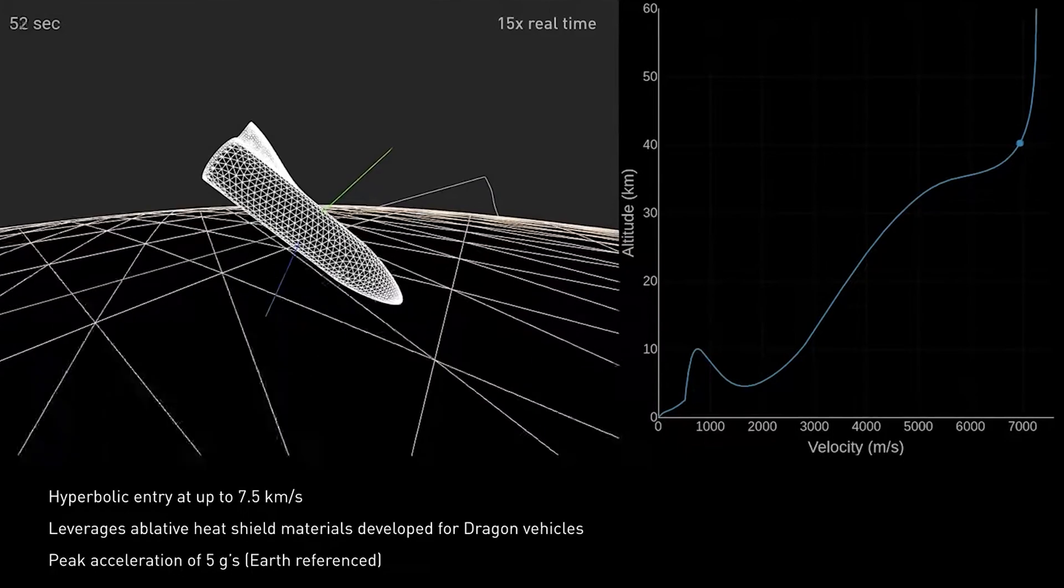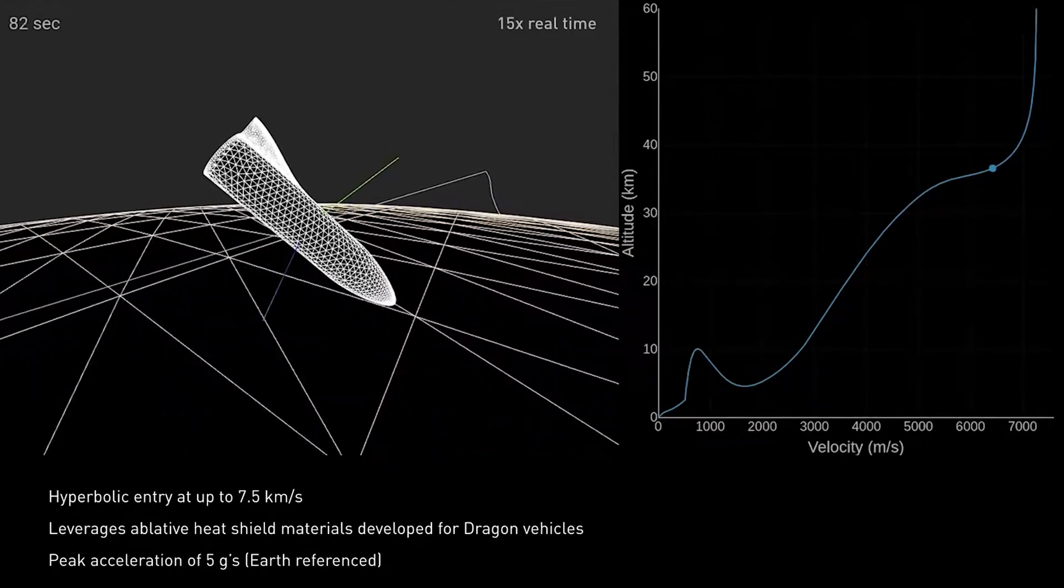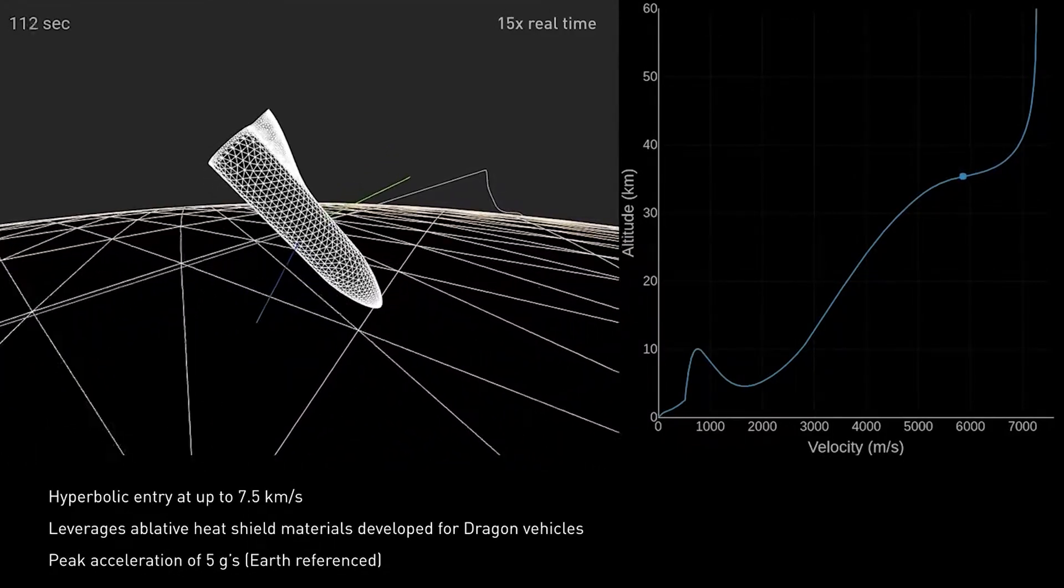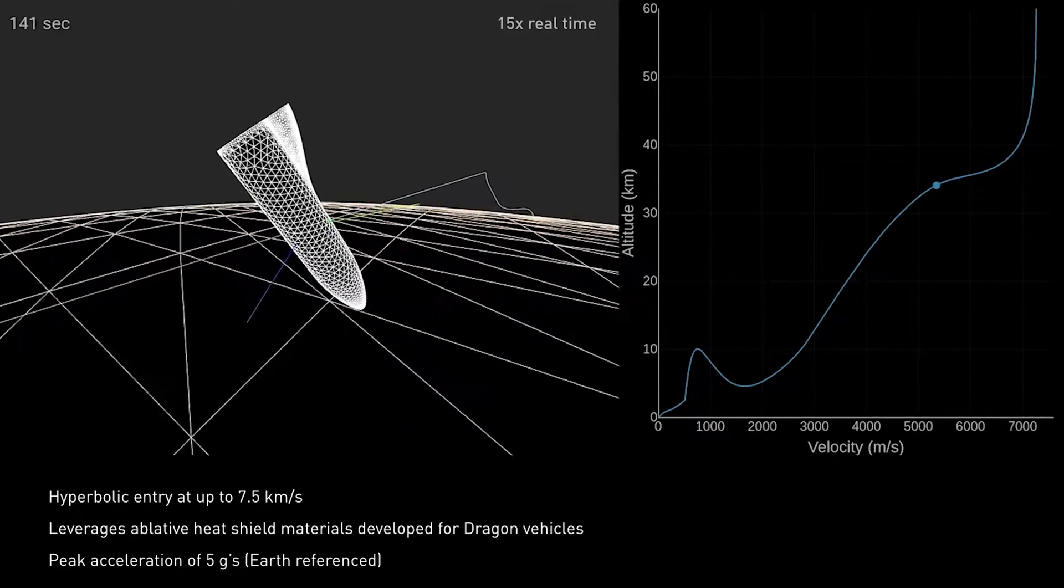SpaceX has provided a visualization of Starship using lift to stay on course, where the lift vector points downwards, toward the planet, to help follow the curve of the atmosphere.